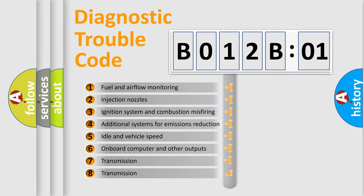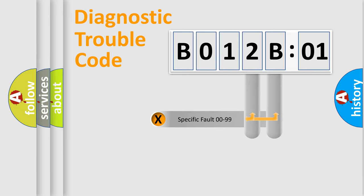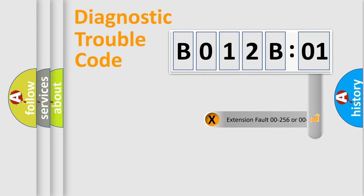The third character specifies a subset of errors. The distribution shown is valid only for the standardized DTC code. Only the last two characters define the specific fault of the group.